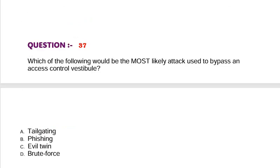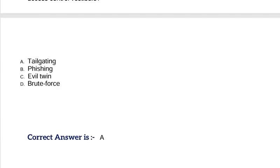Question: Which of the following would be the most likely attack used to bypass an access control? Option A, tailgating. Option B, phishing. Option C, evil twin. Option D, brute force. Correct answer is Option A.